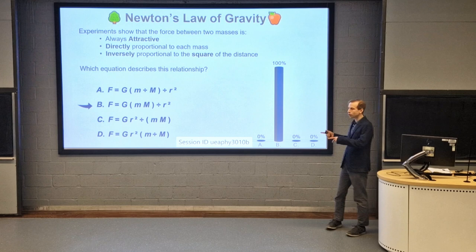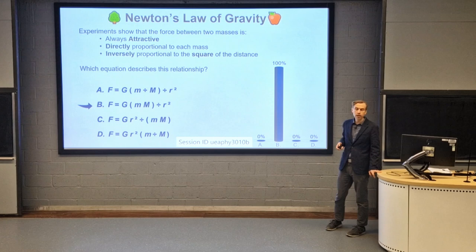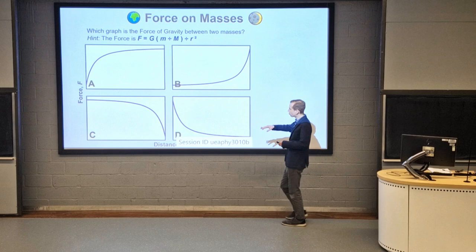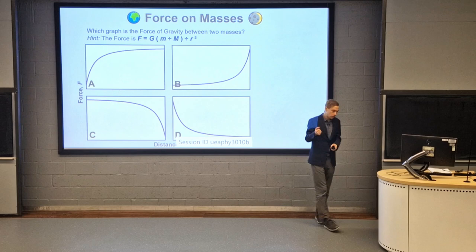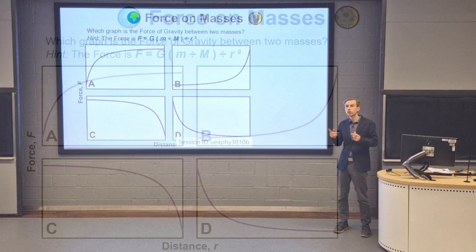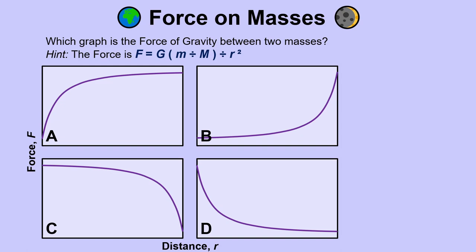Now that's what our force equation looks like. Let's think about what this looks like when we sketch it. I've got four potential graphs here with distance on the horizontal axis and force on the vertical axis. Have a think which of these four sketches is a graph of the force law where the force is inversely proportional to r squared. A good tip: think about what happens for really small values of r and really large values of r - what happens to the force as r goes to zero and as r goes to infinity.